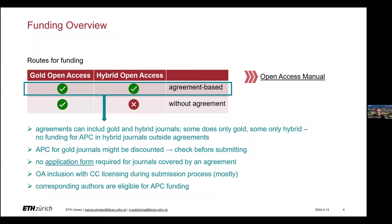Upon submission or after acceptance of your paper, you will have to sign a Creative Commons license if you decide to publish open access, which is the state-of-the-art in scholarly publishing nowadays. Please note that at ETH Zurich, only corresponding authors are eligible for APC funding.